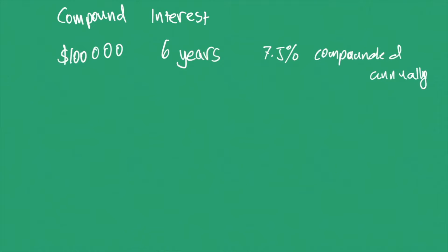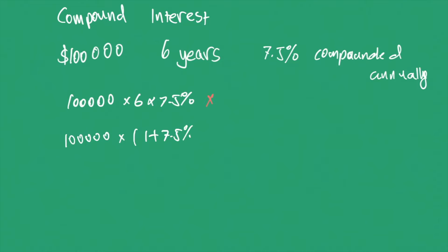So unlike simple interest, where we multiply the amount of money by the number of years and by the interest rate, that's not what we do here. In compound interest, we multiply the amount of money by one plus the interest rate, and we multiply by one plus the interest rate again on top of that, and we keep multiplying until we reach the final year.